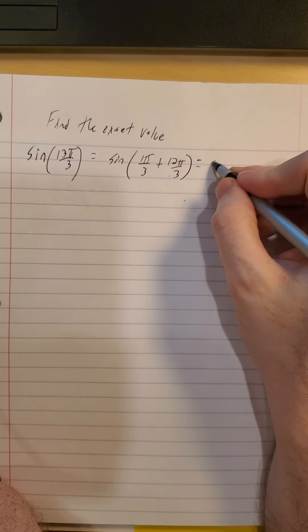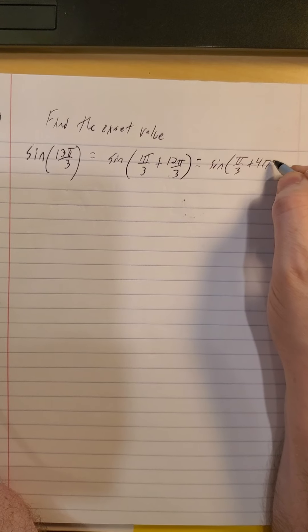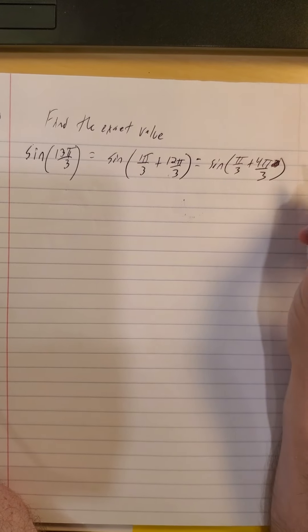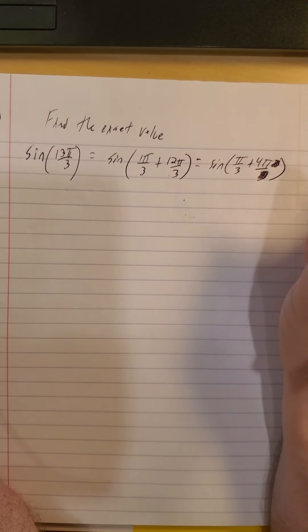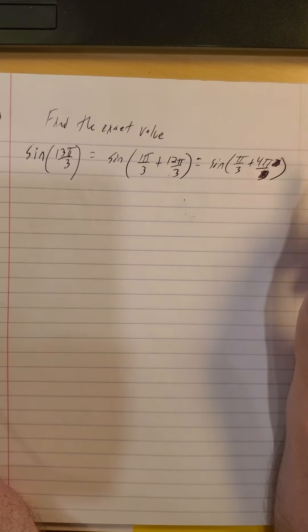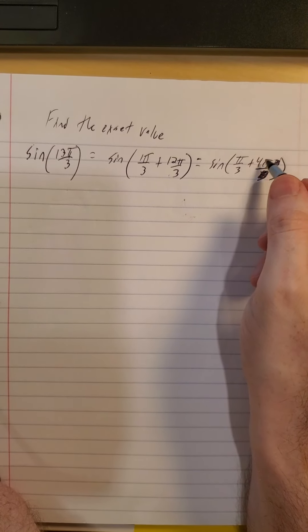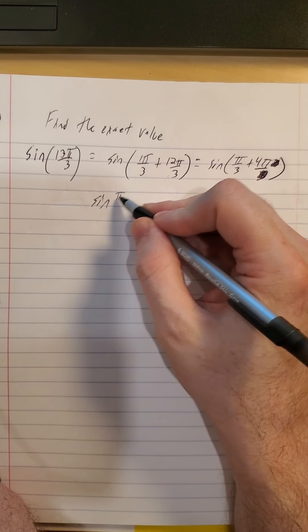So that is then the sine of π over 3 plus 4π over 3. I drew that 3 there. Not over 3 either. π over 3 plus 4π.